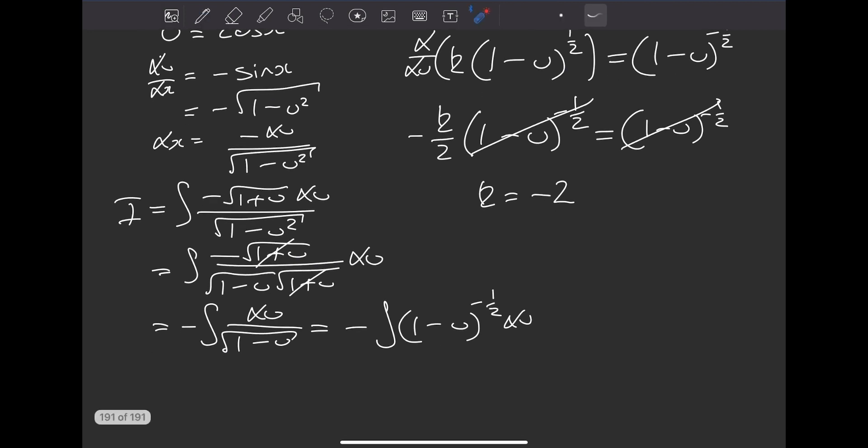So our integral came from minus 2 lots of the bracket with a positive 1/2 as the power. Sticking this all together, our minuses from the 2 and here will cancel off. So all we're going to have is 2 times 1 minus u to the positive 1/2, plus c, a constant.